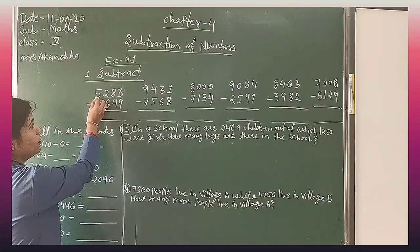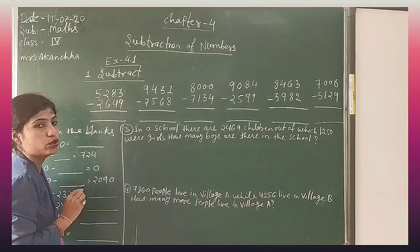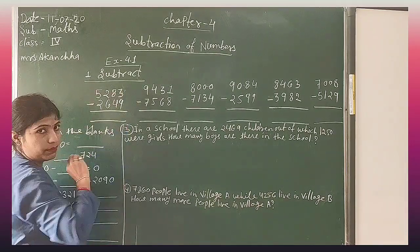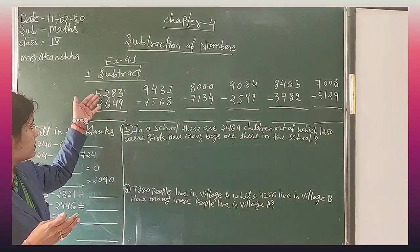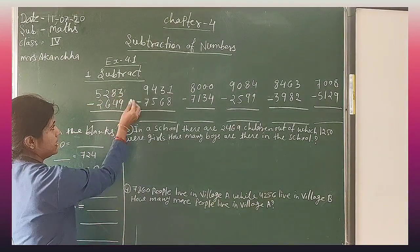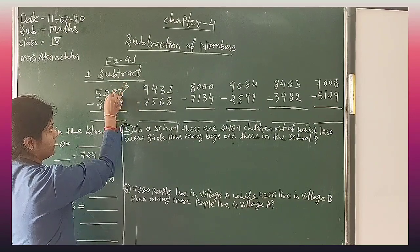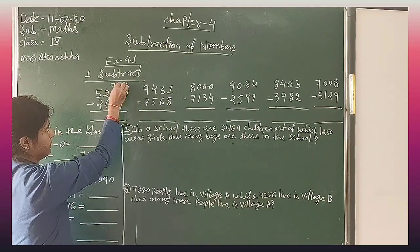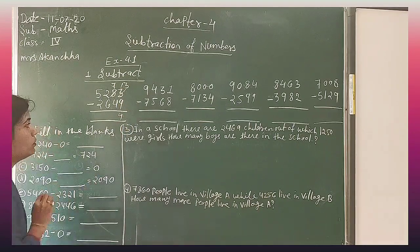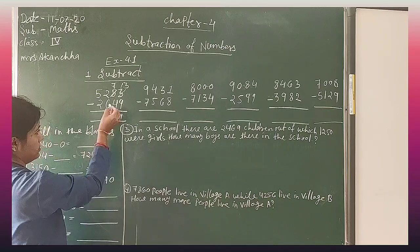First: 5283 minus 2649. We have to write the larger number on top and the smaller number below, and we will start from the ones place. 3 minus 9 — borrow. 1 carry, then 13. 13 minus 9 is equal to 4. 7 minus 4 is equal to 3.